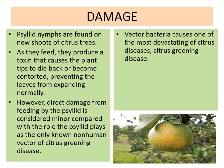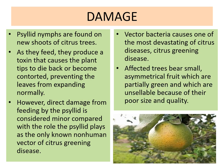Feeding can vector the bacteria that causes one of the most devastating citrus diseases — citrus greening disease. Affected trees bear small, asymmetrical fruits which are partially green and unsellable because of their small size and poor quality.